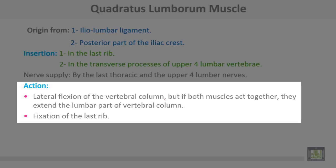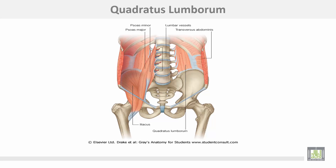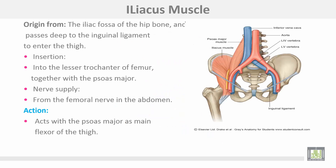Lastly, it has action on the last rib by fixing it during respiration. This is the quadratus lumborum muscle, and this is the psoas major muscle. This is the psoas minor and this is the iliacus muscle. Iliacus muscle: origin from the iliac fossa of the hip bone; passes deep to the inguinal ligament to enter the thigh. Insertion into the lesser trochanter of the femur together with the psoas major muscle. Nerve is supplied from the femoral nerve in the abdomen. Action: it acts with the psoas major as the main flexor of the thigh.